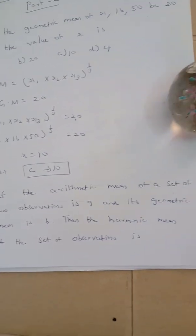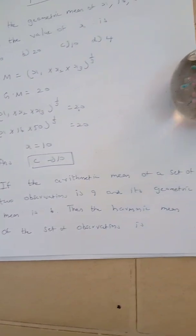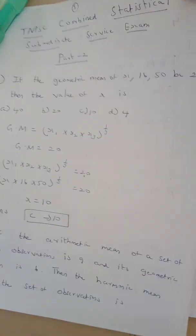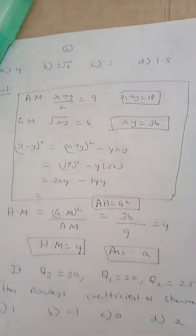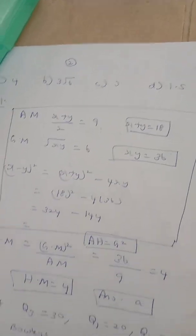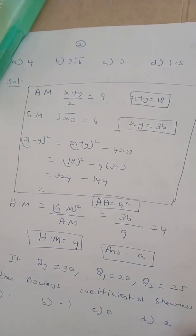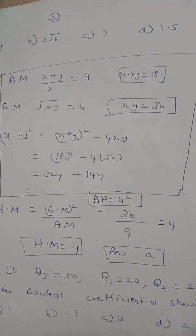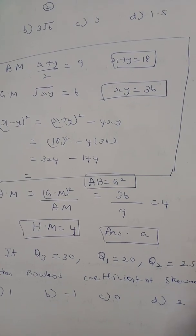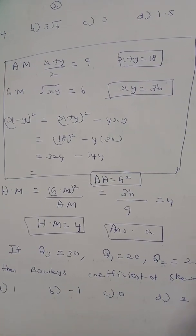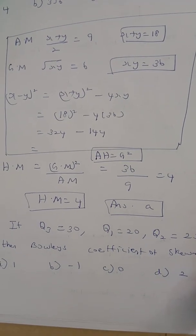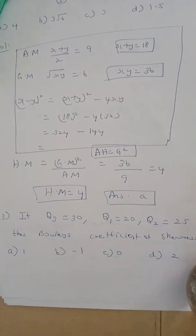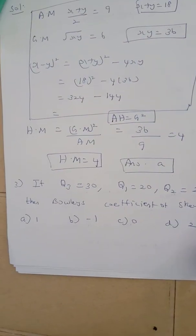Question number 2. If the arithmetic mean of a set of two observations is 9 and the geometric mean is 6, then the harmonic mean of the set of observations is. The harmonic mean equals geometric mean squared divided by arithmetic mean. Geometric mean is 6, so 6 squared is 36, divided by arithmetic mean 9, gives harmonic mean equal to 4. The correct answer is option A.